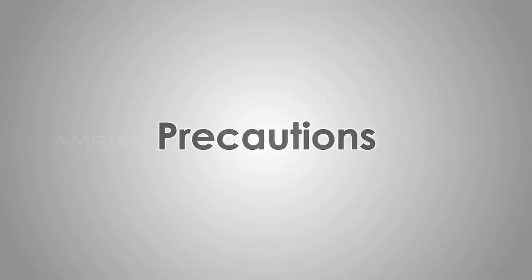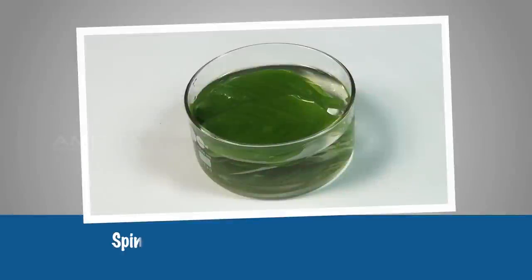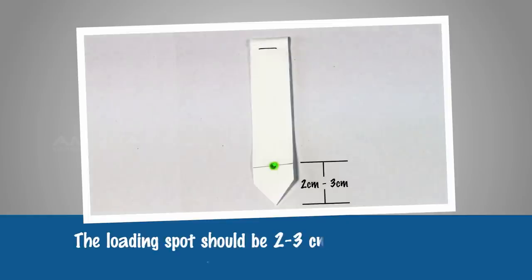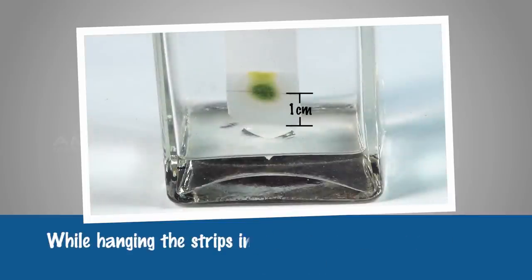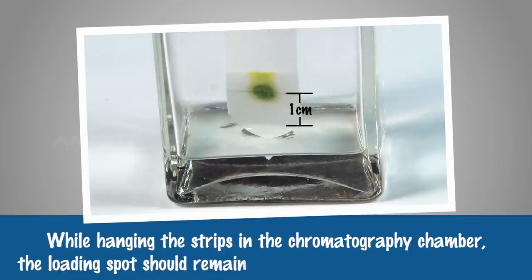Precautions: Spinach leaves should be fresh and green. The loading spot should be 2-3 cm away from the tip of the notch. While hanging the strips in the chromatography chamber, the loading spot should remain about 1 cm above the solvent level.